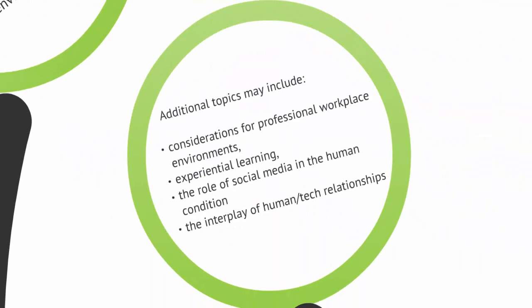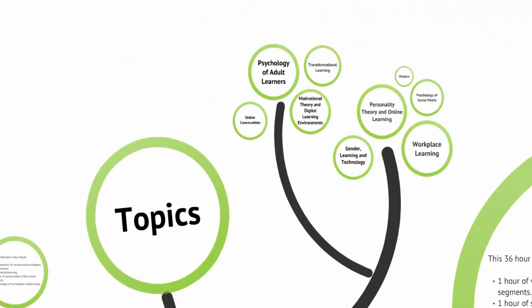Some of the topics we'll examine include considerations for workplace environments, experiential learning covering both formal and informal learning, the role of social media in the human condition, and the interplay of human-technology relationships. The course outline is posted on Blackboard, so you can refer to the written text document, and all of the readings are posted there as well.